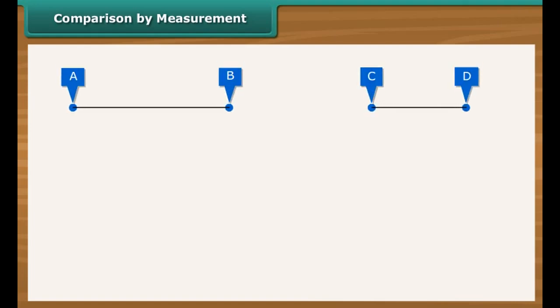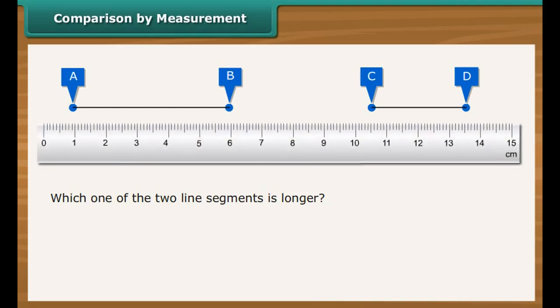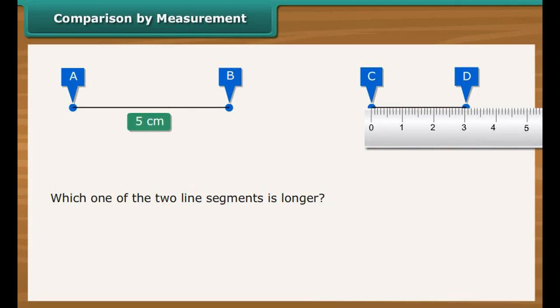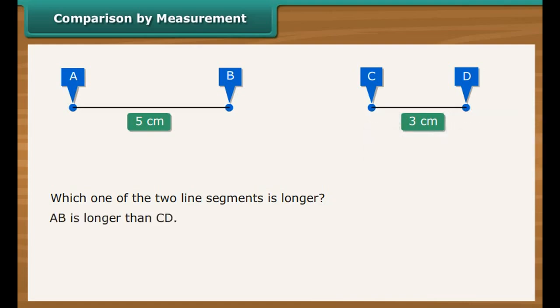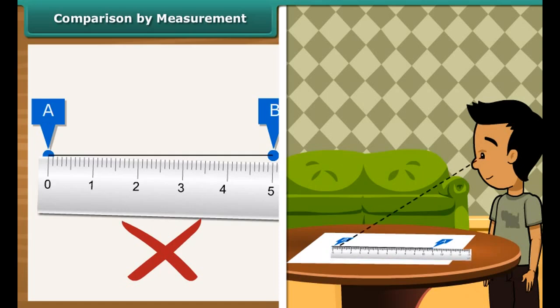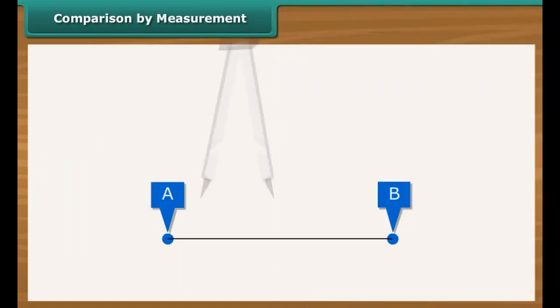Comparison by measurement: Look at the two line segments AB and CD. Which one is longer? Let us measure them with a ruler. On one side the measurements are in inches, and on the other side in centimeters. Let us use the centimeter side. Place the ruler beneath AB such that one end is right beneath A. Mark the length of AB — it is 5 cm. Repeat for CD — the length of CD is 3 cm. Therefore, AB is longer. Measurements can go wrong if the ruler is not placed correctly or if viewed from the wrong angle. A better way to measure is to use the divider.